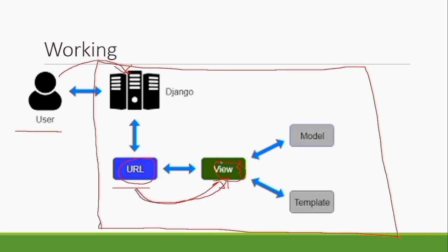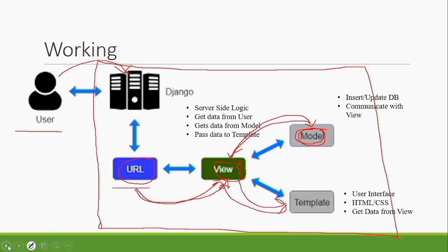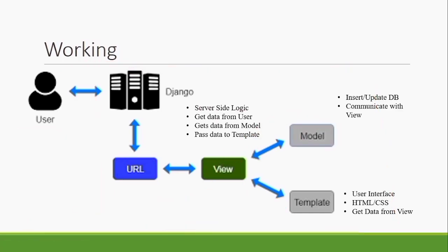After the view processes its logic, if it needs to fetch data from the database, it will interact with the model. The model fetches the data from the database and gives it to the view. The view then passes that data to the template, which presents it properly and returns it to the browser. To summarize: View handles server-side logic and gets data from the model; Model interacts with the database for inserting and updating data and communicates with the view; Template is the user interface — the HTML and CSS file — that gets data from the view.